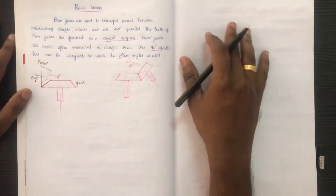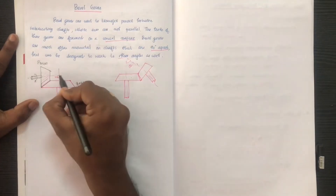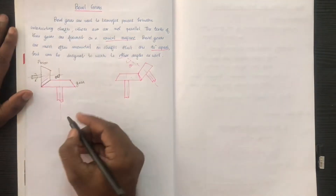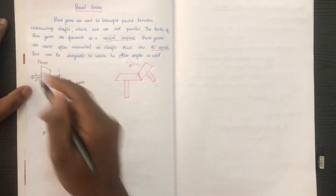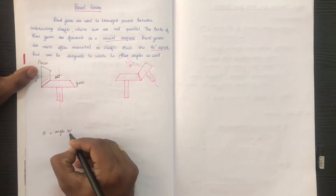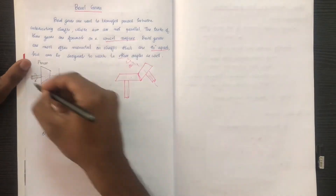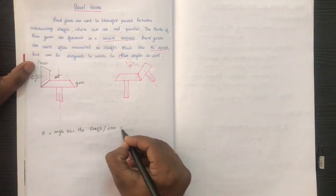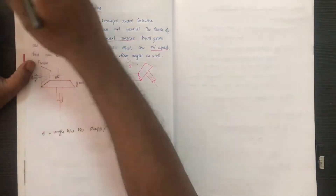We will define the parameters. The first parameter is the pinion axis. We have the angle theta. Theta is the angle between the shafts — the angle between the axes of the gears.